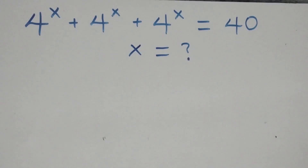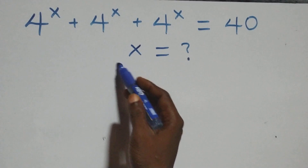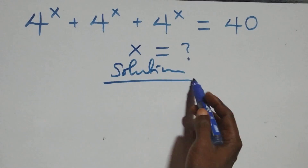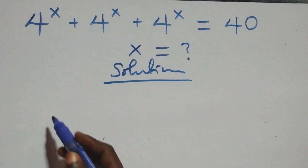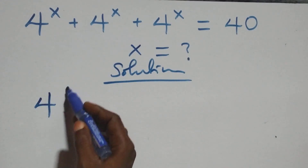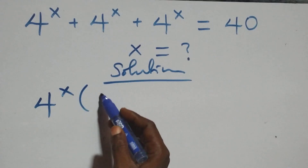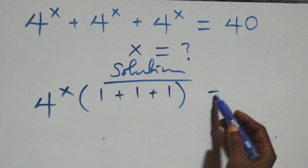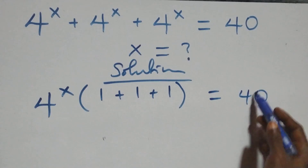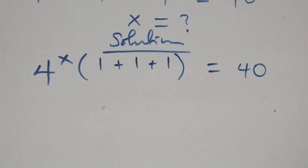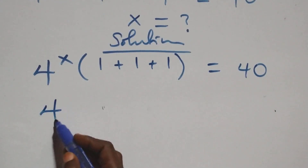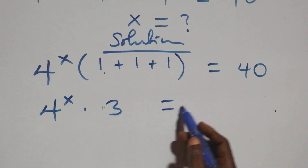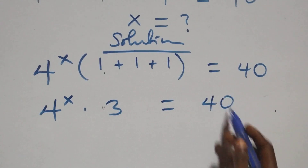Hello, you're welcome. Here we solve this equation. We factor 4 raised to power x out, giving us 4 raised to power x times bracket 1 plus 1 plus 1, equals 40. This is the same as 4 raised to power x times 3 equals 40.